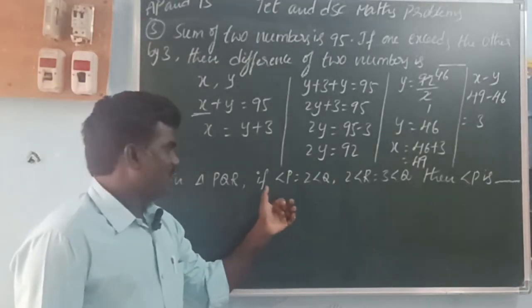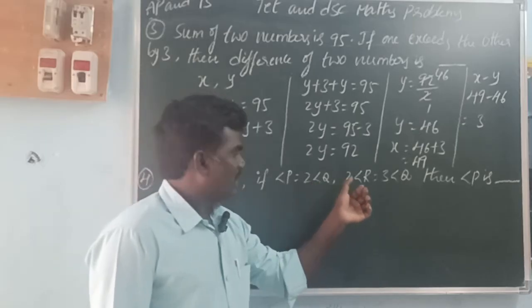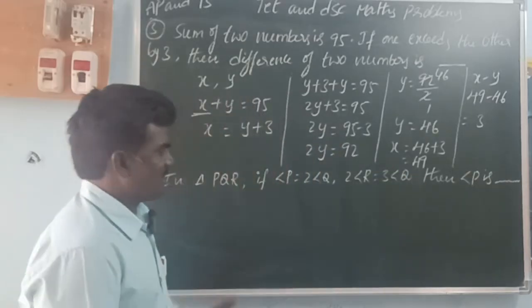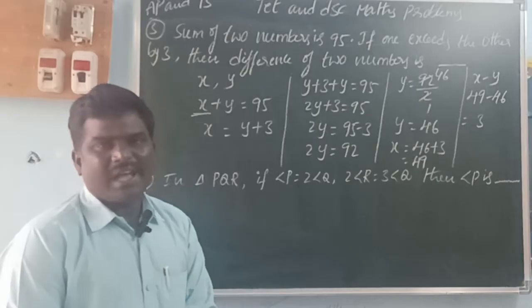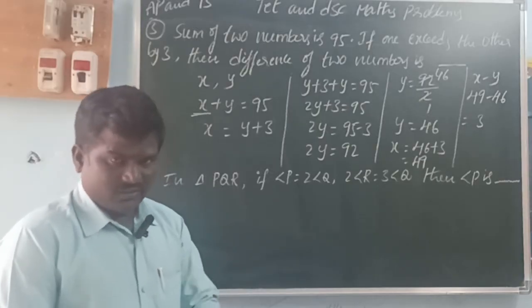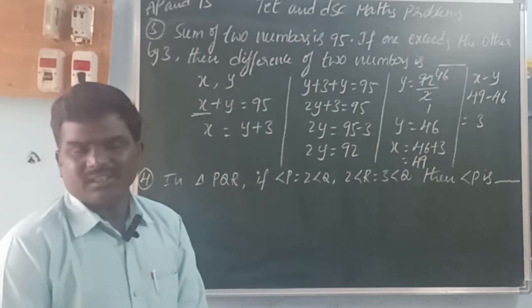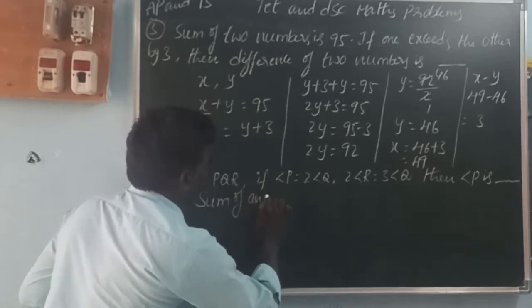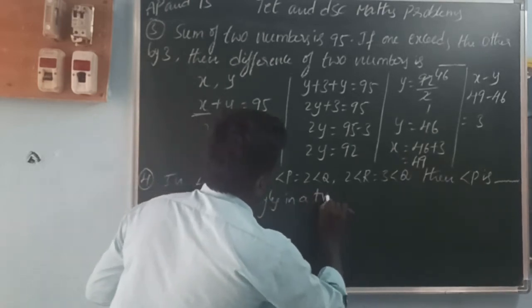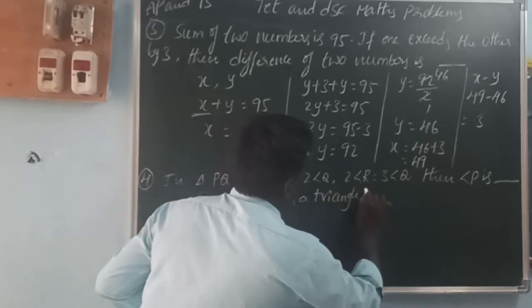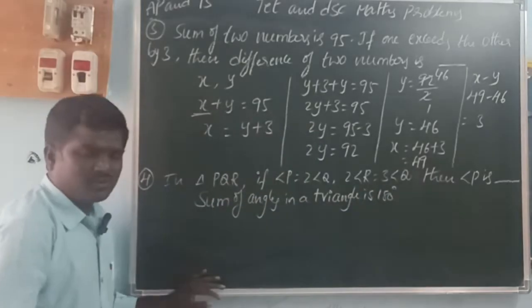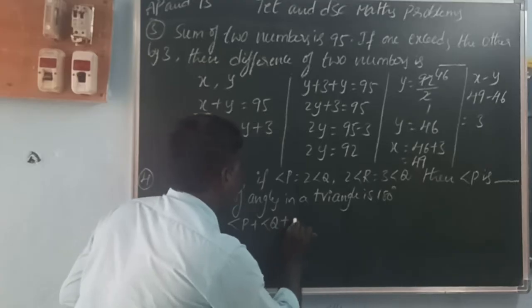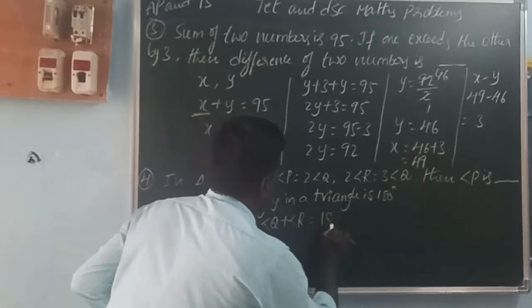Next problem: In triangle PQR, if angle P is equal to 2 times angle Q, and 2 times angle R equals 3 times angle Q, then what is angle P? Sum of angles in a triangle is 180 degrees. So angle P plus angle Q plus angle R equals 180.